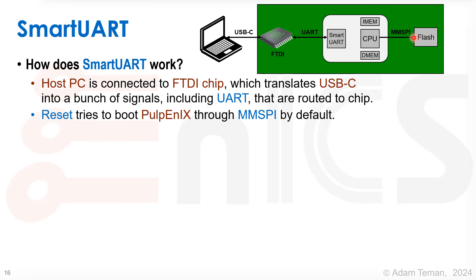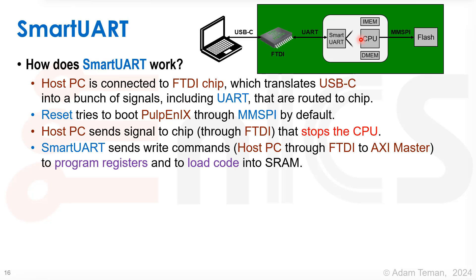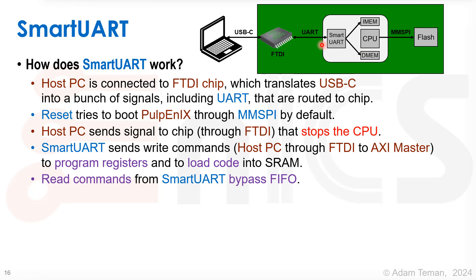What happens when we reset? Pulpenix is by default mapped to the MMSPI, so it tries to read from flash, but we haven't put anything on the flash disk. The host PC sends a signal to the chip that stops the CPU, releasing the bus and halting it. Then Smart UART writes things into the instruction memory and data memory — essentially writing our binaries into these tightly coupled memories. Read commands go and fetch from whatever memory-mapped address we want; because we know the command was initiated through the master, there's a bypass that returns the result directly to our computer.